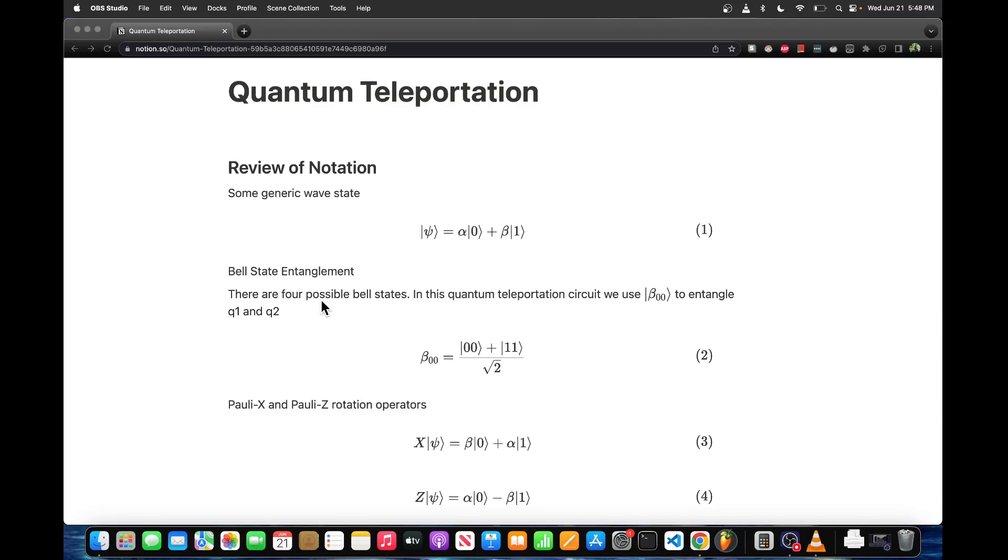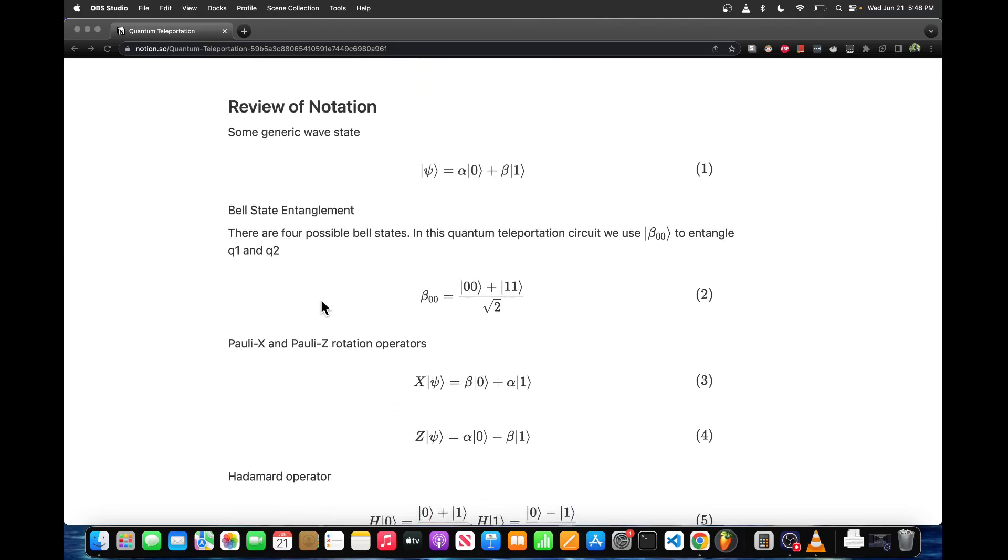In the last video I went over how to build a quantum teleportation circuit in IBM quantum composer and Qiskit. In this video I want to go over a little bit of the math behind what makes quantum teleportation work. I wasn't sure how to make this video because my handwriting is very atrocious, so I decided to write everything out in LaTeX that way it's easier to read, and if anybody wants the notes I can give them the notes.